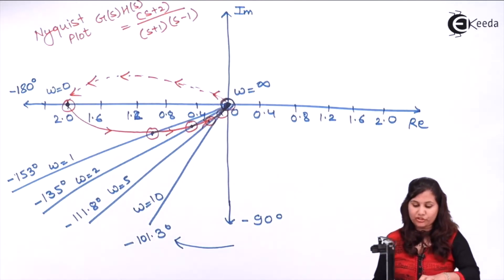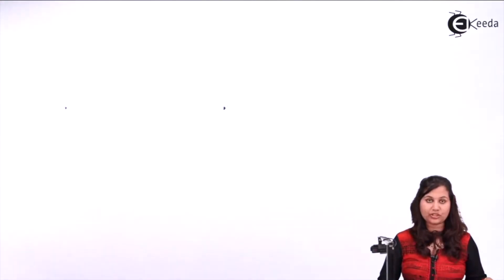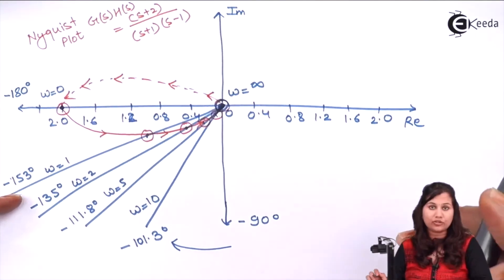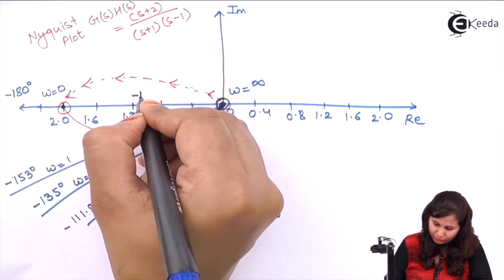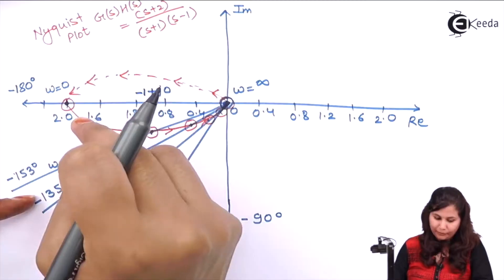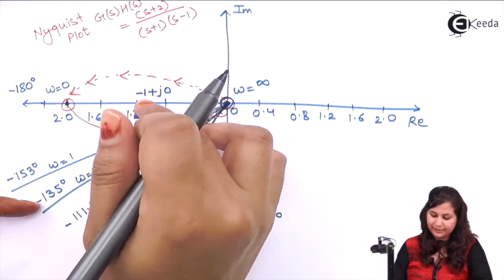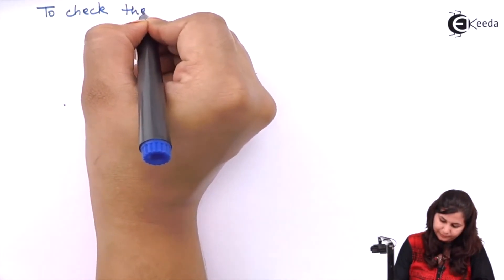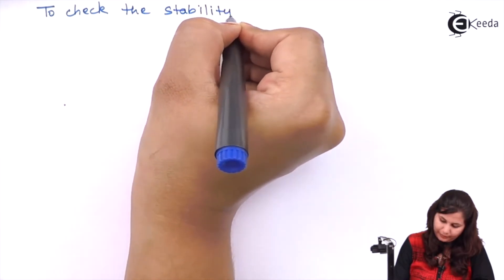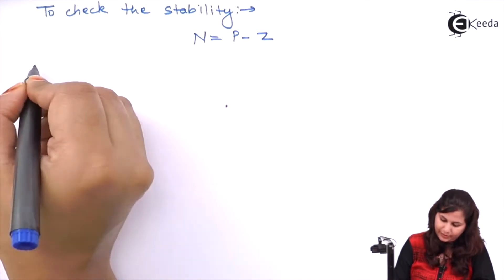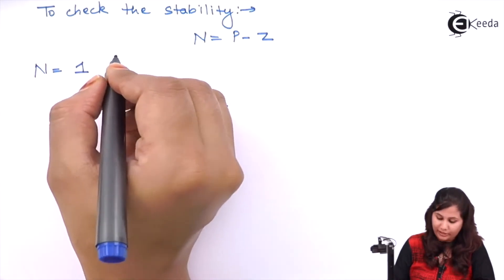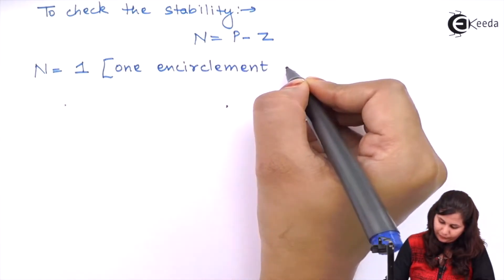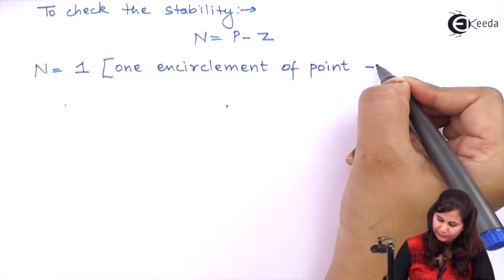For checking the stability of the system we will use the equation N = P - Z, and we observe the encirclements of the point (-1 + j0). The number of encirclements N of this point is 1, since the closed path encircles it one time.